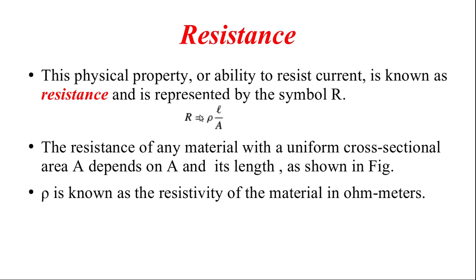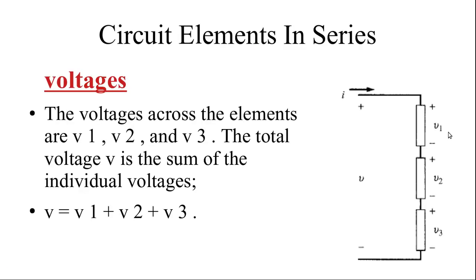The resistance of a material depends on its cross-sectional area A and its length L. To see how ohm-meter comes as a unit: solving for rho gives rho = R × A / L. Resistance is in ohms, area is in meter squared, and length is in meters, so ohm × meter² / meter = ohm-meter. That is how the unit of resistivity is ohm-meter.